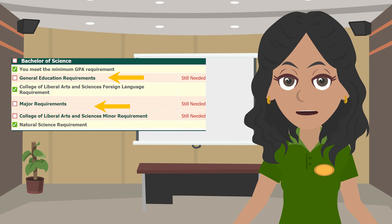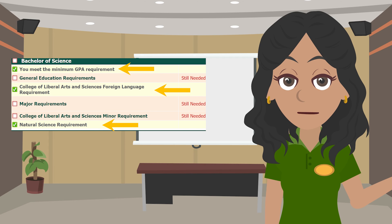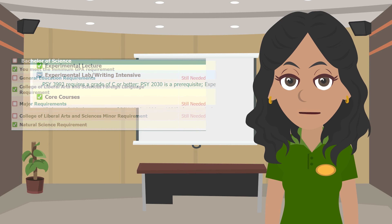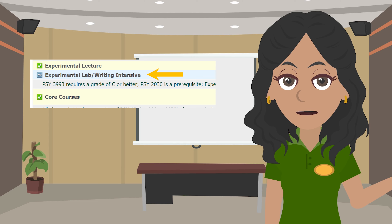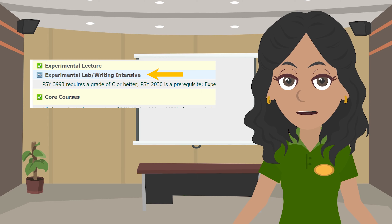Classes highlighted in red with empty boxes are the ones you still need to take. The classes highlighted in yellow with checked boxes indicate that you've successfully completed that required course and earned the credits towards your degree. You might see some classes highlighted in blue with a squiggle in the box, but don't worry — this just means you are currently registered for the course, but still need to complete it in order to receive the credits.